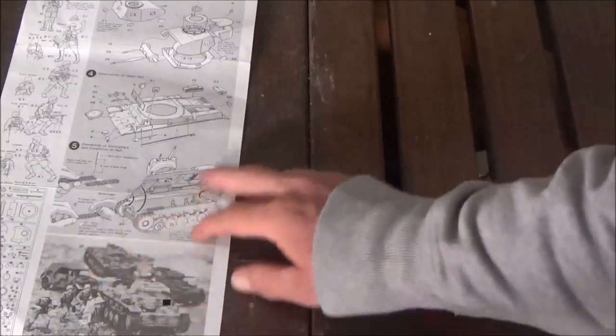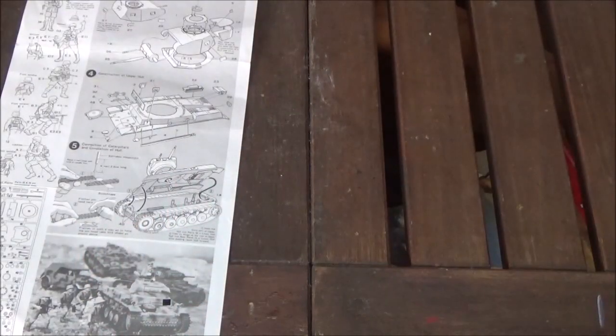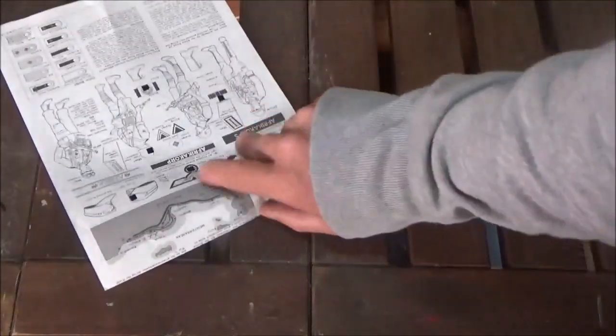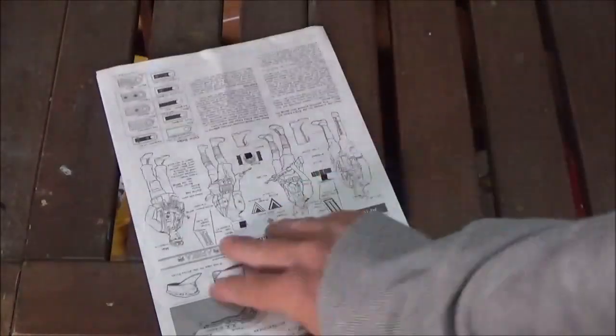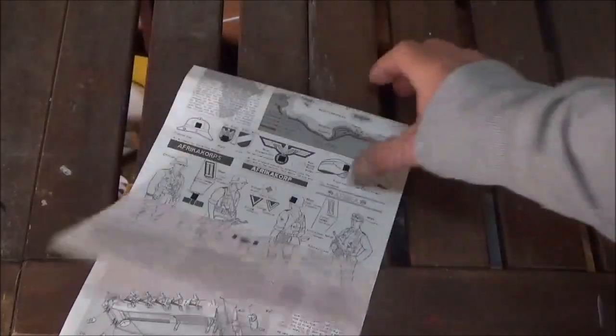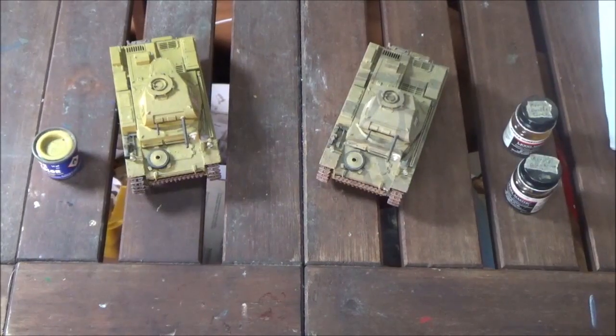Then here at the end you put the track on and put the turret on the top of the hull and you're finished. There's no painting instructions here but it does explain how they were painted. I was wanting to build more of them even.